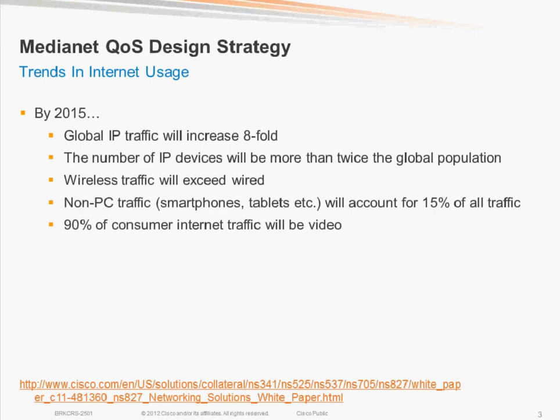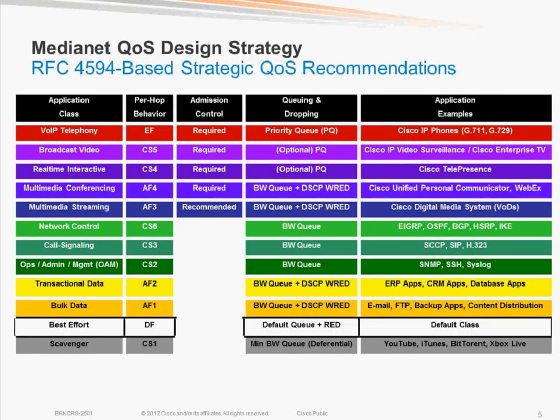There's a very relevant RFC — RFC 4594 — which for the first time has associated various standard per-hop behaviors with specific applications or application classes. In the past, RFCs like RFC 3246 would say this is an expedite forwarding per-hop behavior — a strict priority queuing service — but there was no mention of what application should receive that service. For example, DSCP 46 marked packets will come to the front of the line. That's the behavior, but the RFC makes no connection to specific applications.